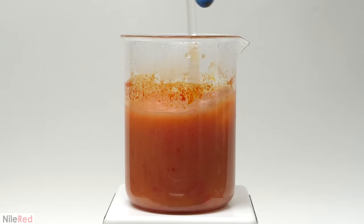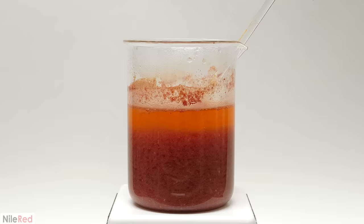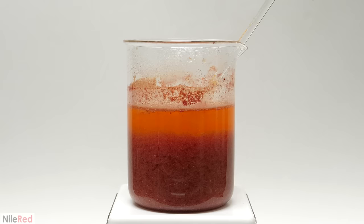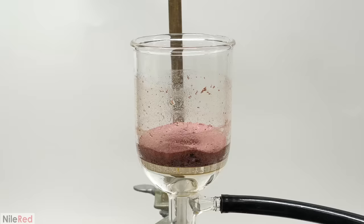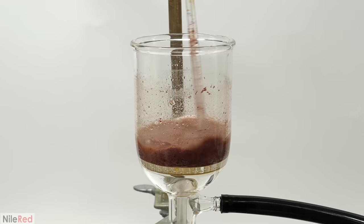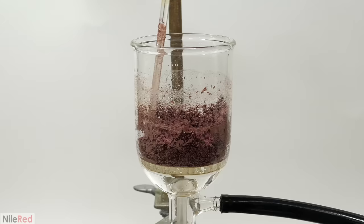This process didn't happen instantly though and the product just slowly crystallized out over the course of about 10 minutes. When it looked like it was done it was time to get rid of all the water and I did this by vacuum filtration. So I turned on my vacuum pump and started adding the mixture. When everything had been pulled through I washed the beaker and the powder with some more water. I was eventually left with a reddish brown semi-dry powder but it was still really impure.